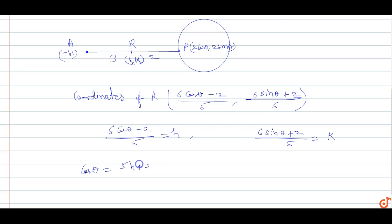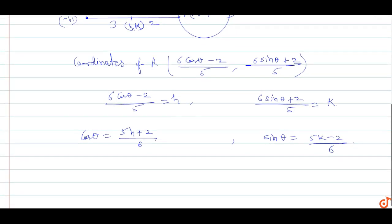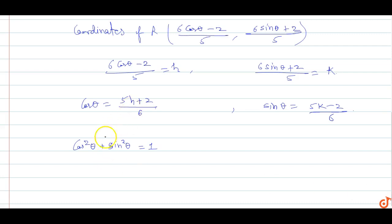So from h: 5h + 2 = 6cosθ, which gives cosθ = (5h + 2) / 6. And from k: 5k − 2 = 6sinθ, which gives sinθ = (5k − 2) / 6. Now we use the trigonometric identity sin²θ + cos²θ = 1. Substituting: ((5h + 2) / 6)² + ((5k − 2) / 6)² = 1.